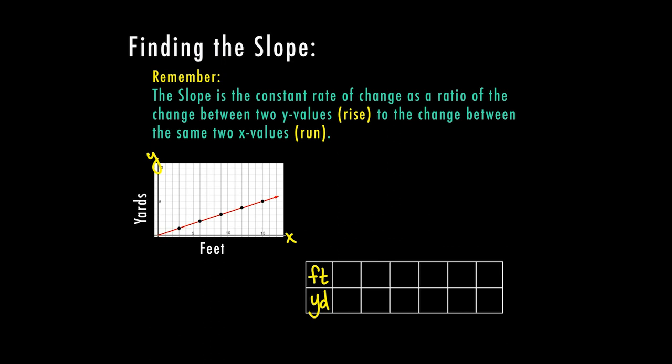So we see here the first ordered pair. When x is three, y is one. Then for the next one, when x is six, y is two. When x is nine, y is three.